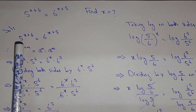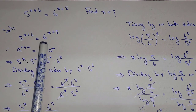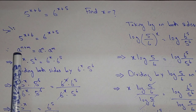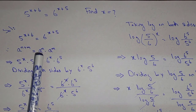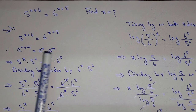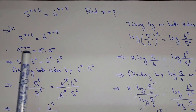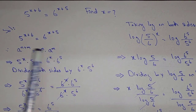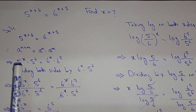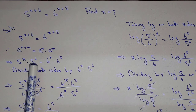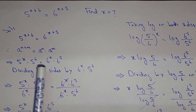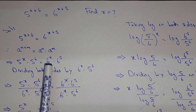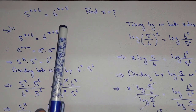So here we have 5^(x+6) = 6^(x+5). Since we know that a^(n+m) = a^n · a^m — when the bases are the same, the powers are added — we apply that here: 5^x · 5^6 = 6^x · 6^5.